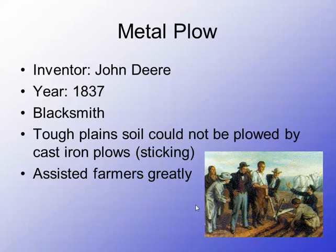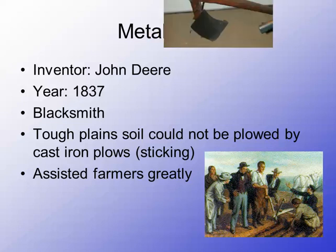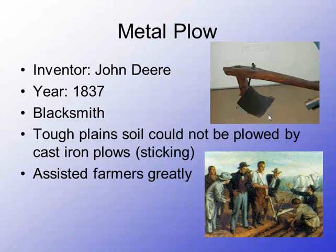Another great farming invention is called the metal plow, invented by a guy named John Deere — a name that should be very familiar to us. It was invented in 1837. John Deere was a blacksmith by trade, so he would shape and work with iron. The tough plain soils couldn't be plowed with ordinary iron plows, so he made a metal plow that could till up the earth so farmers could plant more efficiently. You can see in the image here — using horse power, the farmer stands behind with a couple of handles, and the plow digs a trench in the earth for planting crops. A closer image shows the actual blade used on the metal plow.